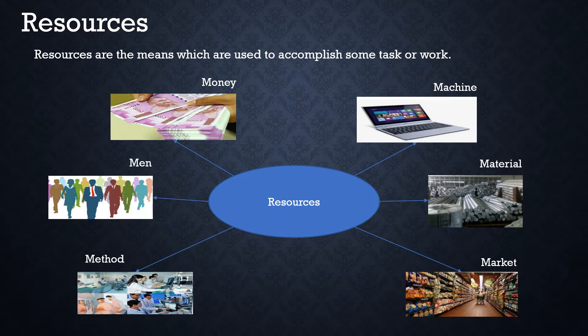Because the business organization has a lot of work, different departments are made for every resource: money — accounting or finance department; machine — operations department; material — supply chain or purchase department; market — marketing department; method — production or operations department; and finally, man or human being, which are required to work in all departments and sections — the Human Resource Management department.